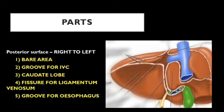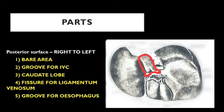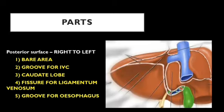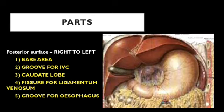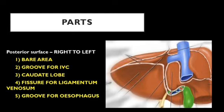Just to the left of the groove for the inferior vena cava is the caudate lobe, bounded above by the coronary ligament, below by the porta hepatis, on the right by the groove for the inferior vena cava, and on the left by the fissure for the ligamentum venosum. The caudate lobe presents two processes at its lower end: the papillary process on the left and the caudate process on the right. The caudate process forms the upper boundary for the epiploic foramen, which communicates the lesser sac and greater sac and is present behind the right free margin of the lesser omentum.